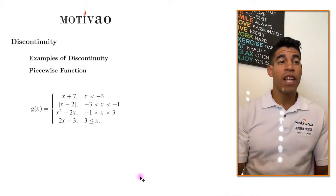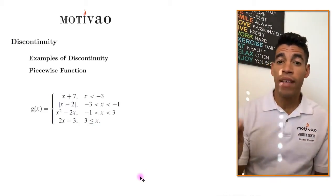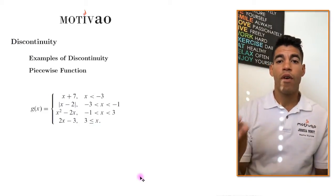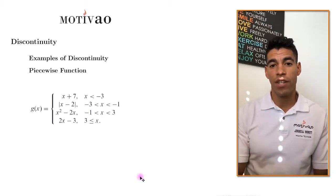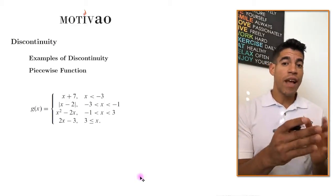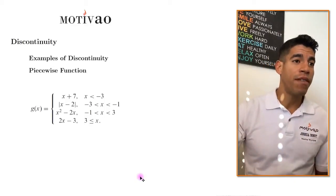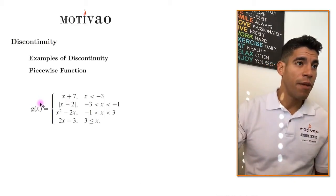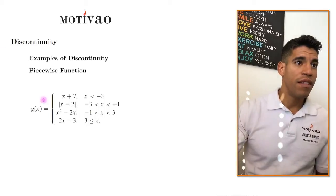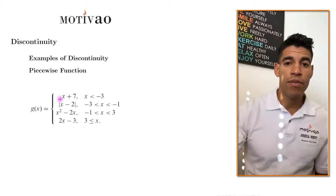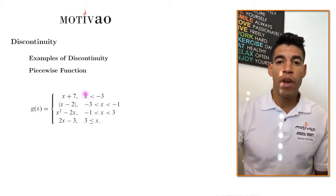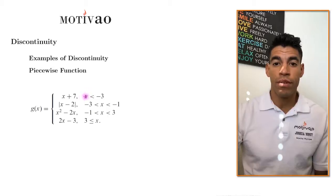Today we're going to talk about an example of discontinuity for a piecewise function. In this example, I have g of x as the piecewise function, and it's separated by intervals.